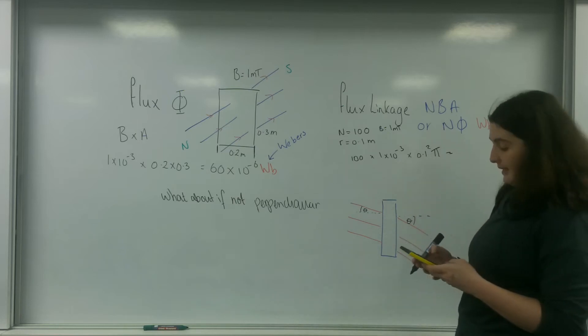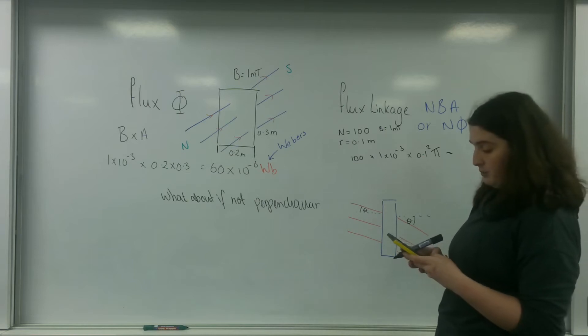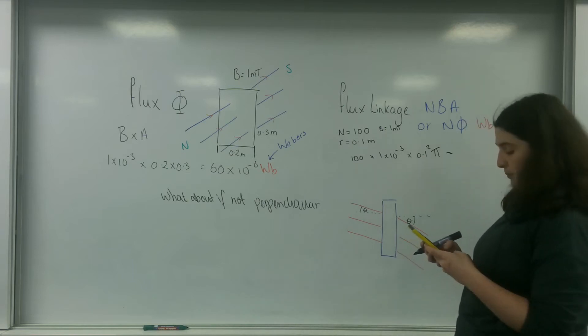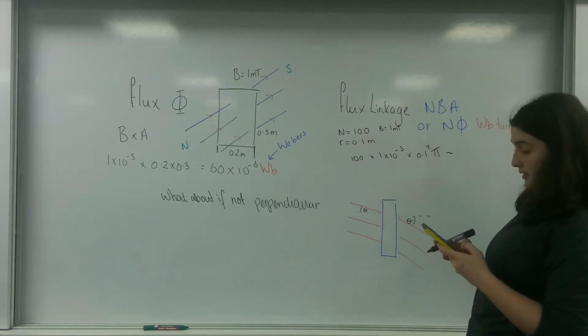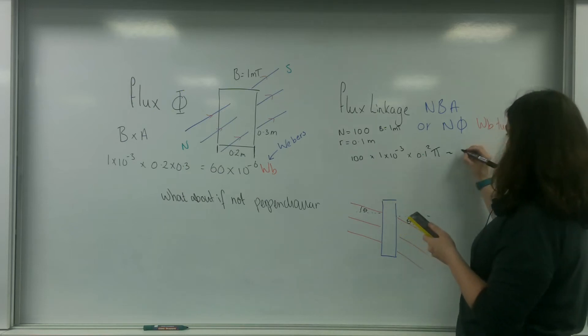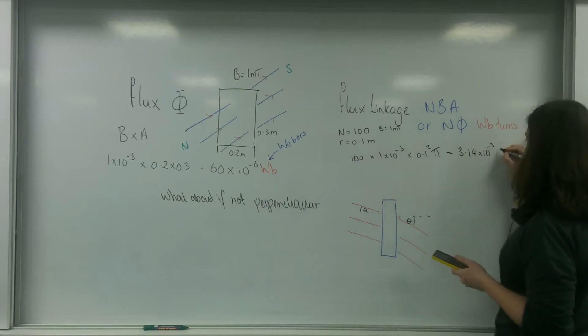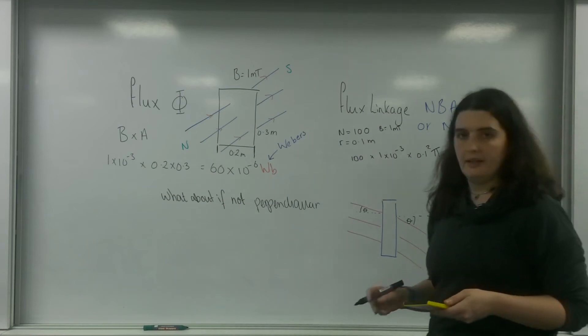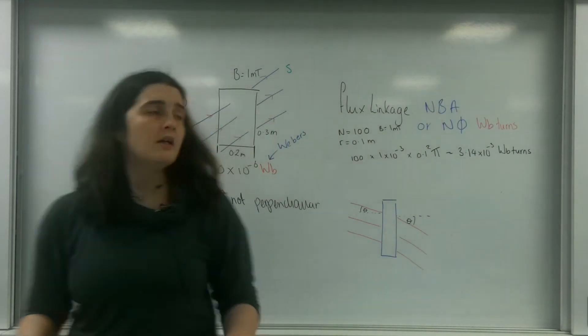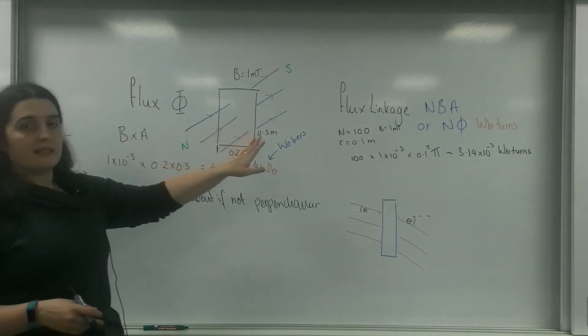I'm putting that into my calculator now. 100 times 1 times 10 to the minus 3, times by 0.1 squared, times by pi, equals 3.14 times 10 to the minus 3 Weber turns. So this is flux, and this is flux linkage.